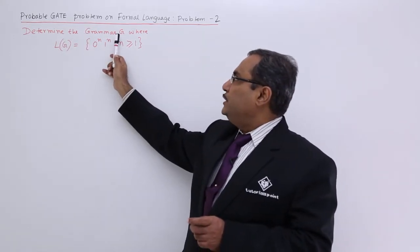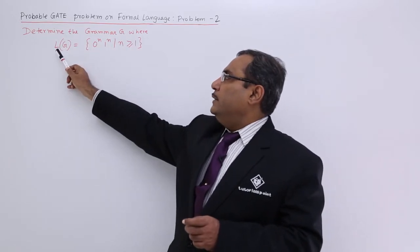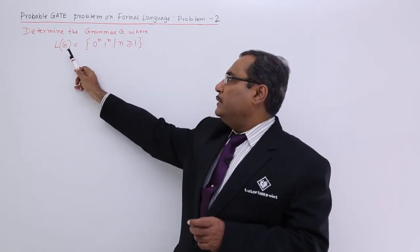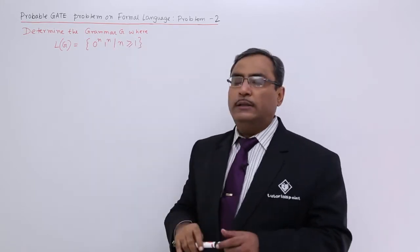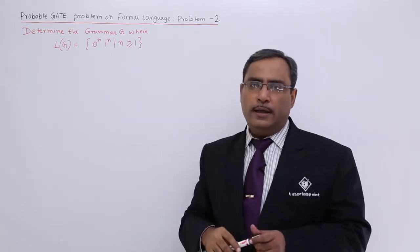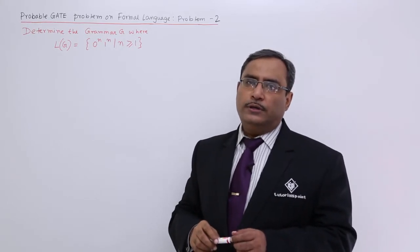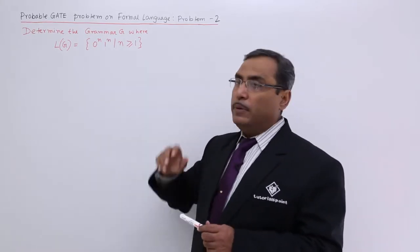Determine the grammar G where L of G, the language of the grammar, is equal to 0 to the power of n, 1 to the power of n, where n is greater than or equal to 1. That means at least 1 one and at least 1 zero should be there. That is the main problem here.